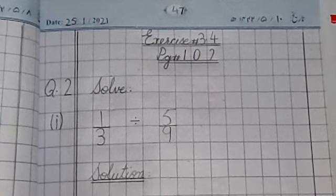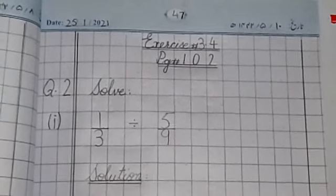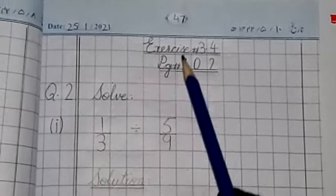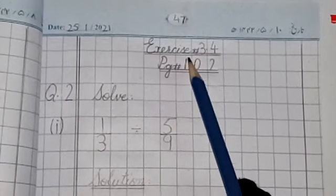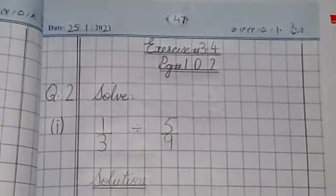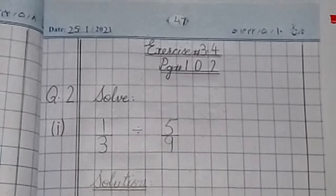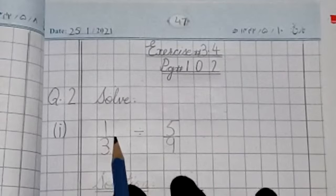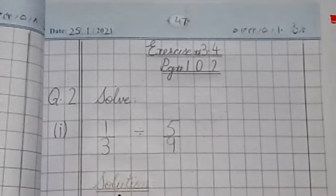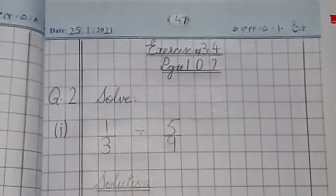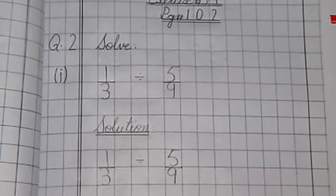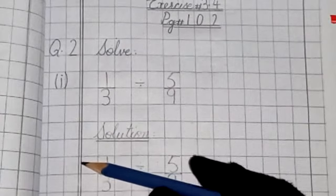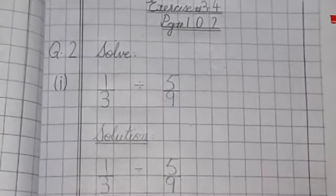I have already prepared my page. Date is 25th 1st 2021, page number, Islamic date, exercise 3.4, page number 102. Double underline. Question number 2, solve, part number 1: 1 by 3 divide 5 by 9. Solution.